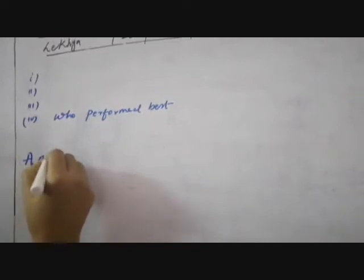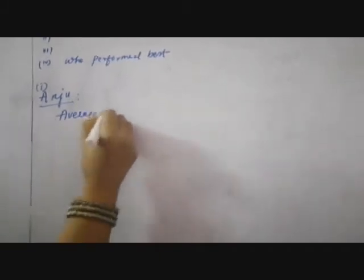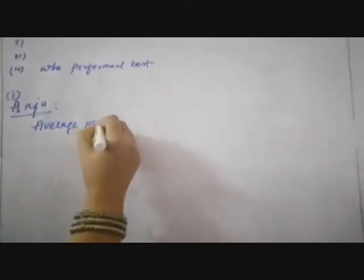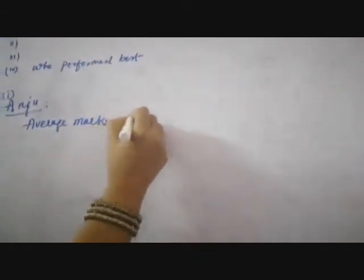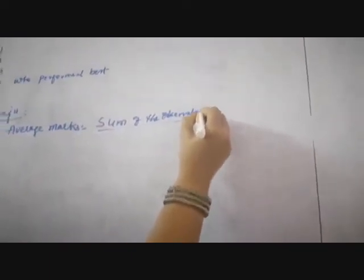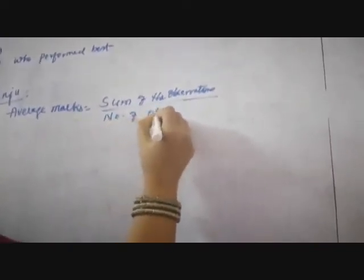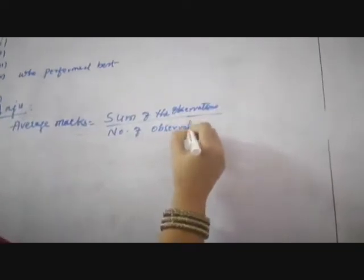So first of all you have to find Anju. Average marks of Anju is equal to — what is the formula children? Average is nothing but mean: sum of the observations divided by number of observations.